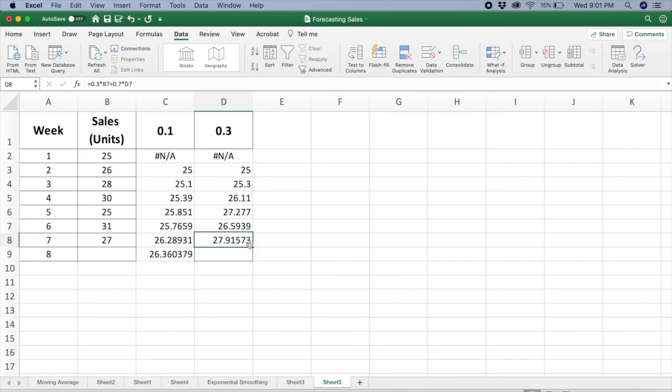Next, you can just drag this down. And you can see now the predicted value, the forecast value for using 0.3 is 27.6. So can you see both these values are different if we are assigning different weights?